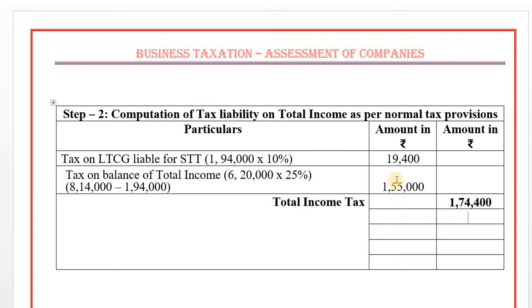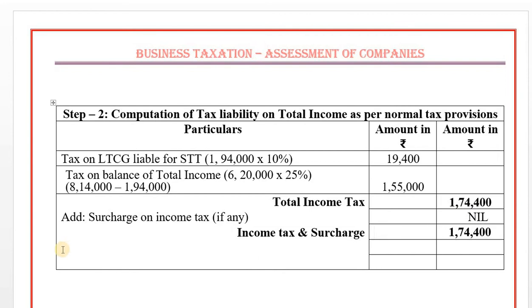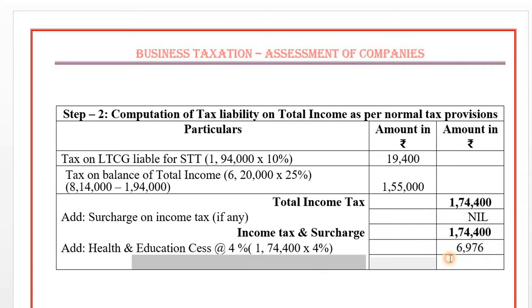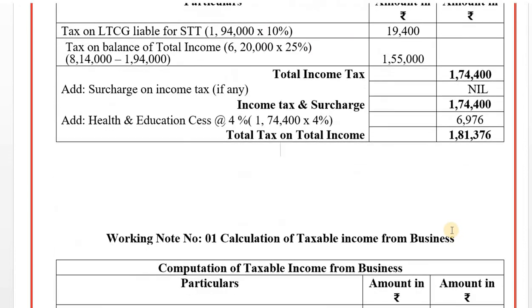Total tax liability on total income as per normal provisions of Income Tax Act: Rs. 1,74,400. This completes Steps 1 and 2 under normal provisions. Now we move to Step 3 — computation of book profit and Minimum Alternative Tax.